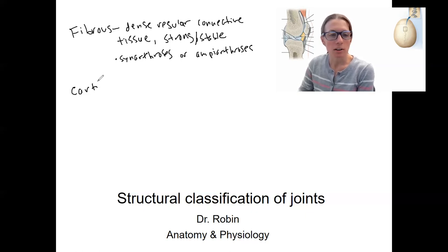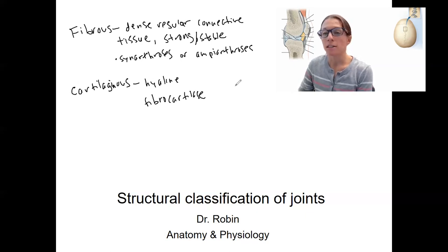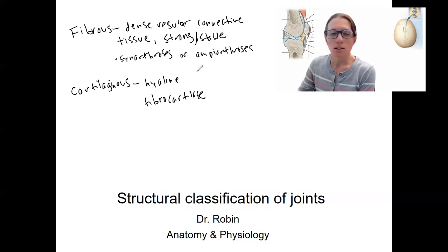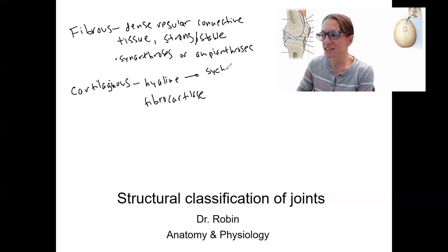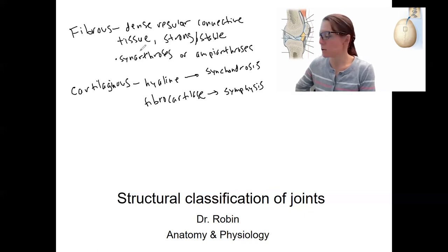Then we've got cartilaginous joints. These are going to be either hyaline cartilage or fibrocartilage, which also allow for little or no movement. When it's hyaline cartilage it's called a synchondrosis, and when it's fibrocartilage it's called a symphysis. These are also going to be either synarthroses or amphiarthroses.